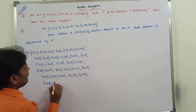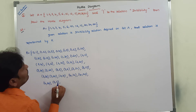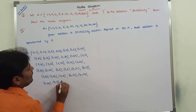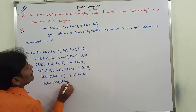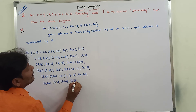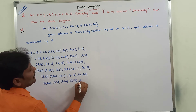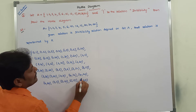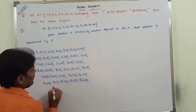Next, 5 divides 5. 5 divides 10, 5 divides 15, 5 divides 20, 5 divides 30, 5 divides 60.